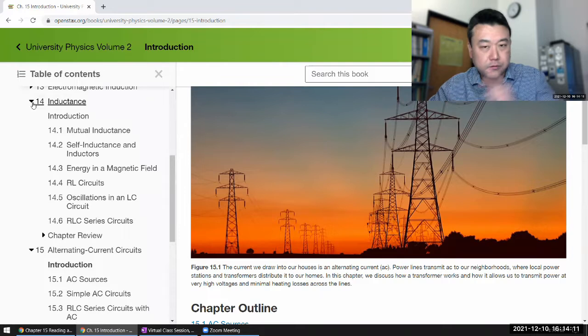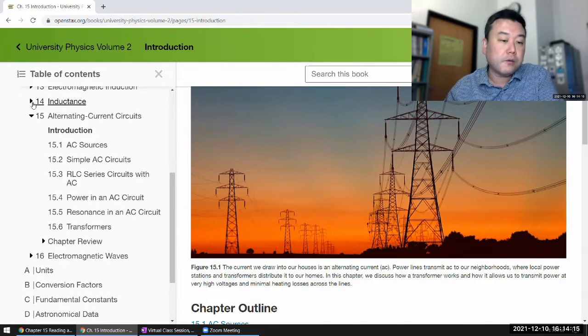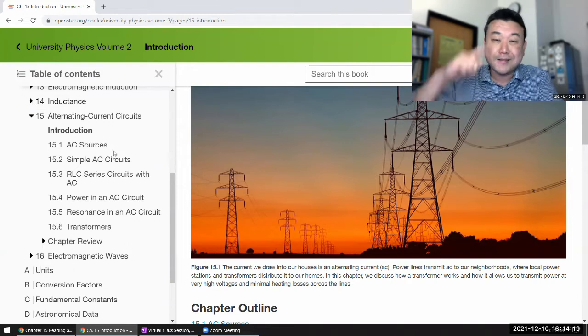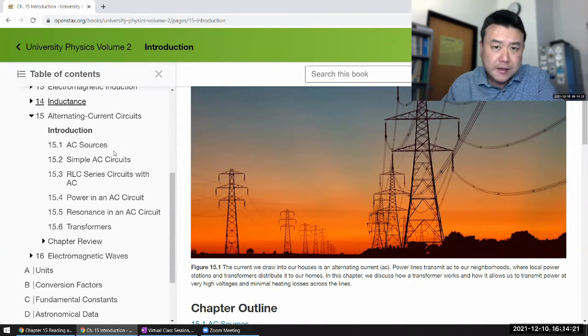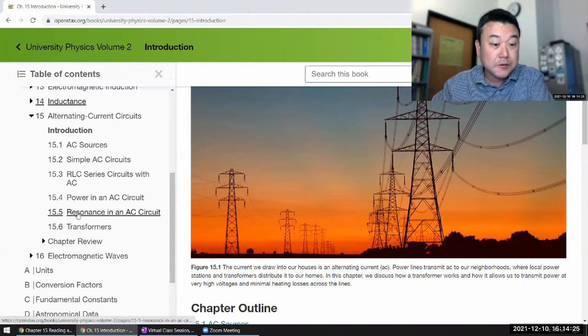You might ask, what's the difference in Chapter 15? If you are working with the same circuit element and alternating current, it sounds like oscillating circuit. And to that extent, it's quite similar. In fact, as you look at the resonance in an AC circuit, you will see the connection.